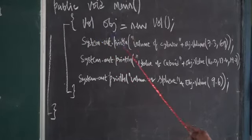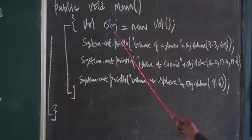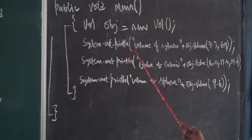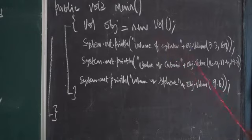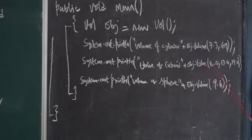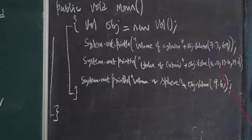In the main method, what do I do? I have a class called as Vol, short form of volume. With the help of this class I created an object called as obj. System.out.println volume of a cylinder.